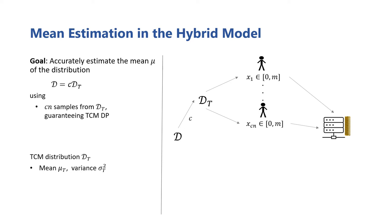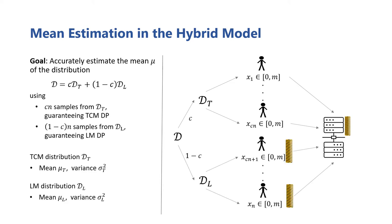This TCM distribution has its own mean and variance, and we need to guarantee differential privacy for their samples under the trusted curator model. The hybrid model is most interesting when the number of TCM users is small, so we can typically think of c as a small percentage, or even a fraction of a percent. The remaining 1-c fraction of samples comes from another distribution specific to the local model user's data, with its own mean and variance, and we need to guarantee differential privacy for their samples under the local model. So now we're using a total of n samples to estimate the mean of this mixture distribution d, ensuring differential privacy for both groups under their preferred trust models.